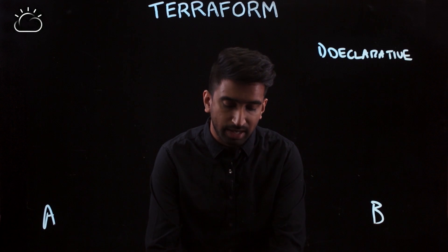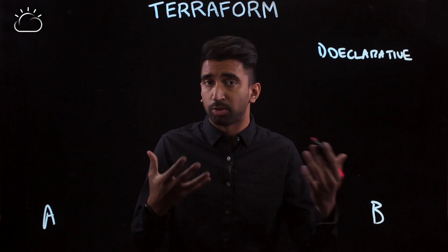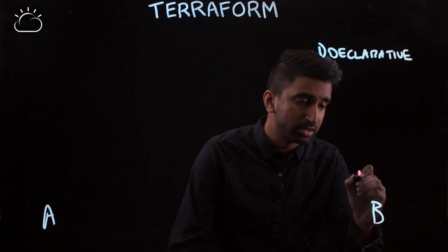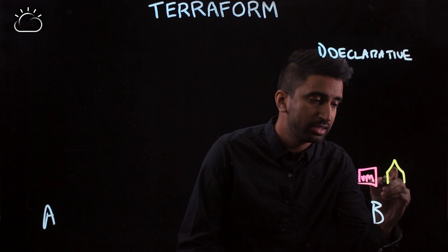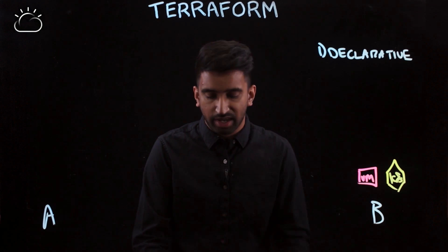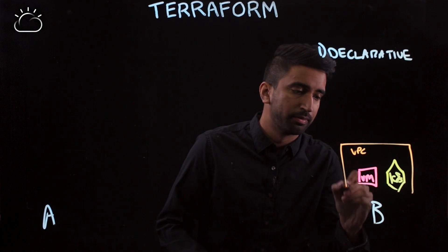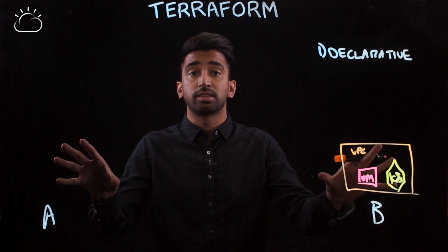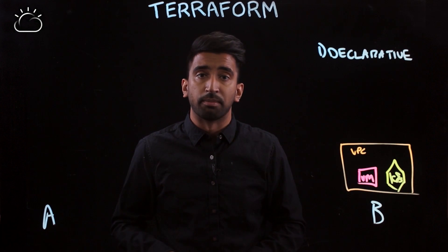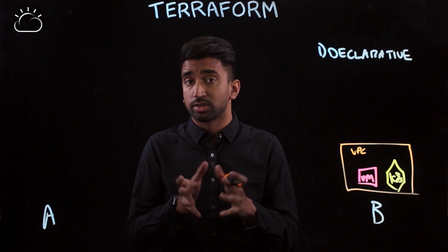Today we'll start with an example. Say you've got three different resources you're trying to spin up as part of your infrastructure: a VM, a Kubernetes cluster, and they're networked together using a VPC, or Virtual Private Cloud. Current state — nothing's there. Desired state is this set of infrastructure. In Terraform, there are three major phases, and we'll go step by step.